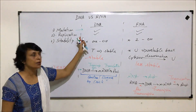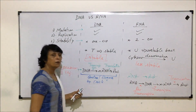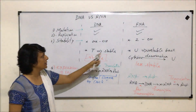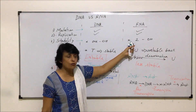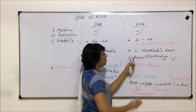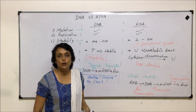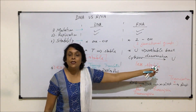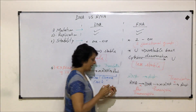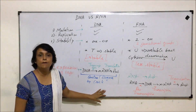Stability-wise, DNA is more stable due to the presence of only one OH functional group and thymine as one of its bases. RNA is comparatively less stable because it has two functional groups and uracil instead of thymine. Uracil is formed from cytosine by a simple deamination reaction, meaning random mutations can occur, making RNA less stable.